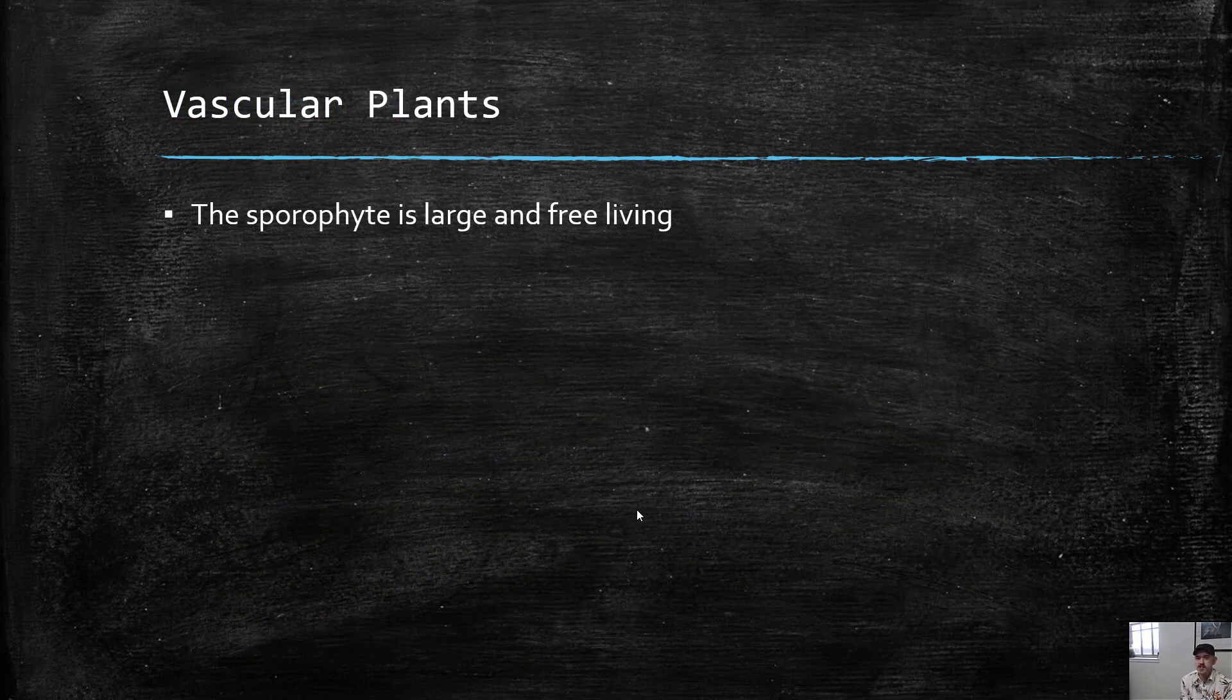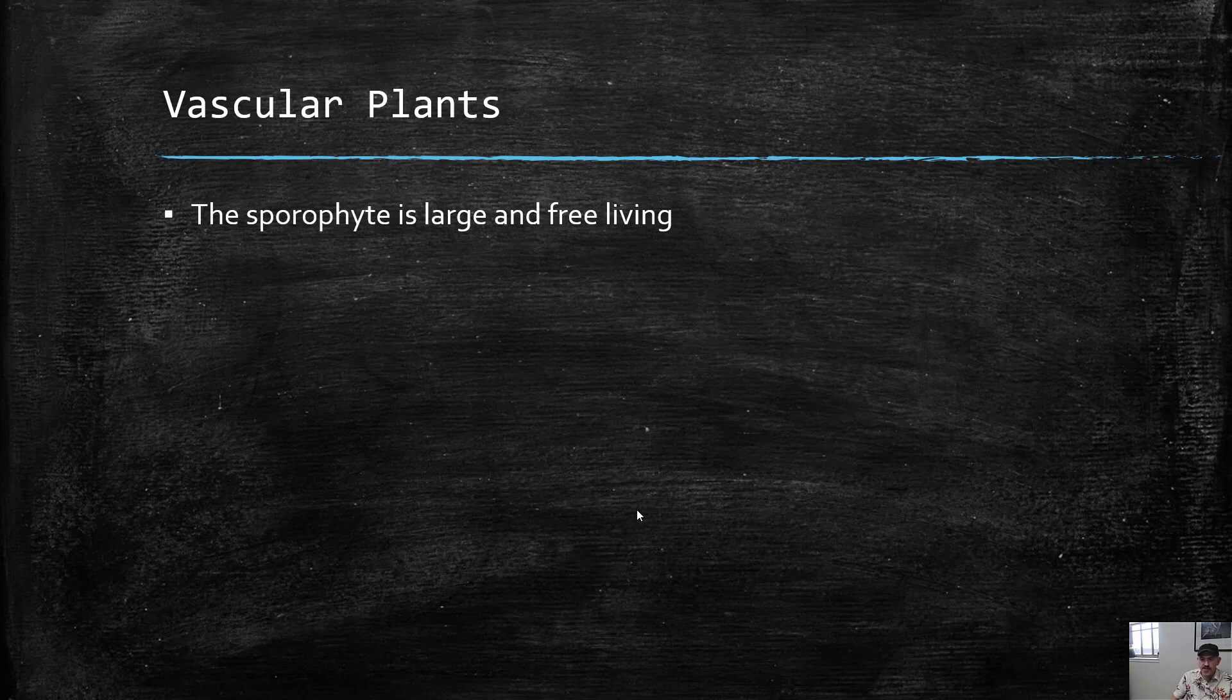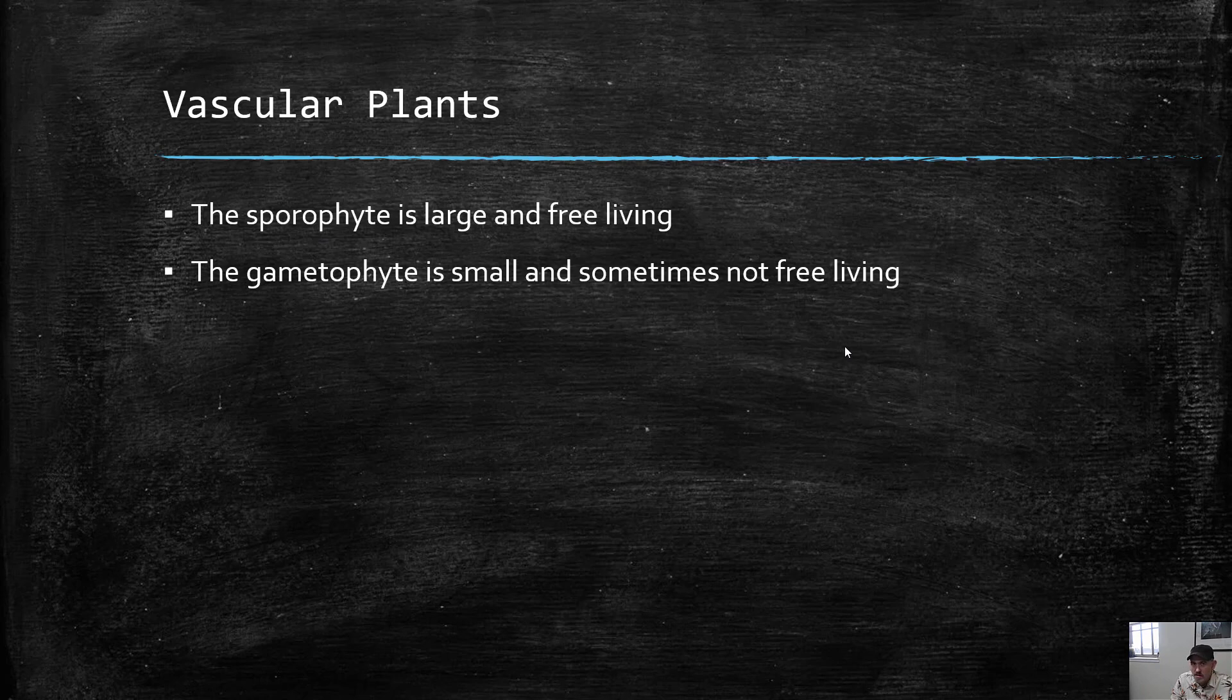So that brings us to vascular plants. Vascular plants are those that have vascular tissues. And in vascular plants, the sporophyte is the big long-lived part. The gametophyte is small, and it gets smaller as we move up the cladogram of plants. And in ferns, it's free living, meaning it's photosynthetic.